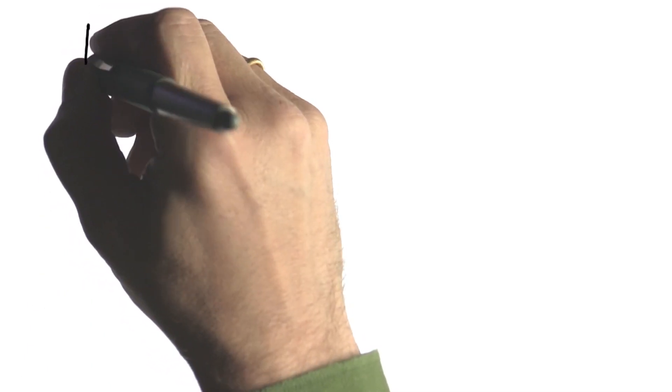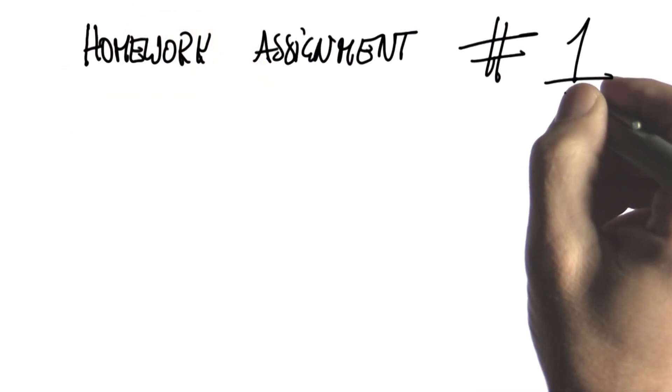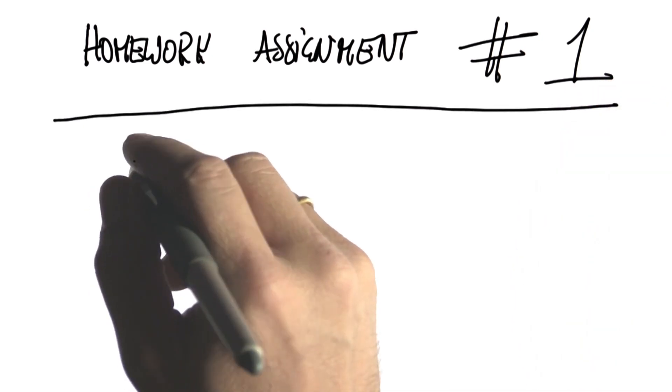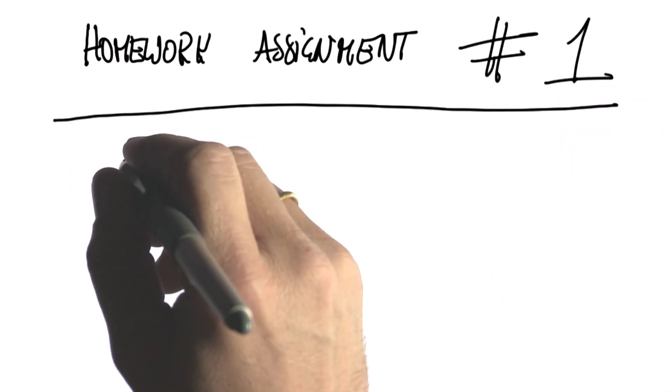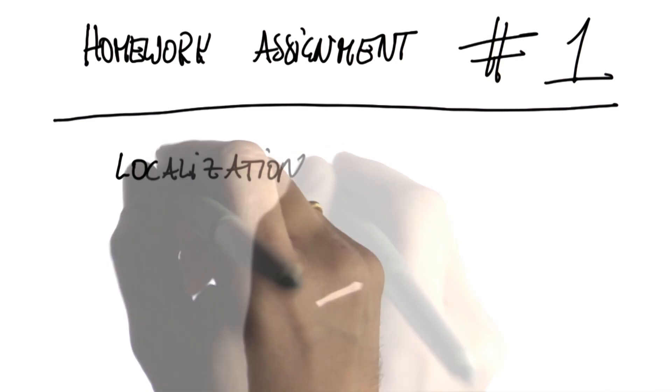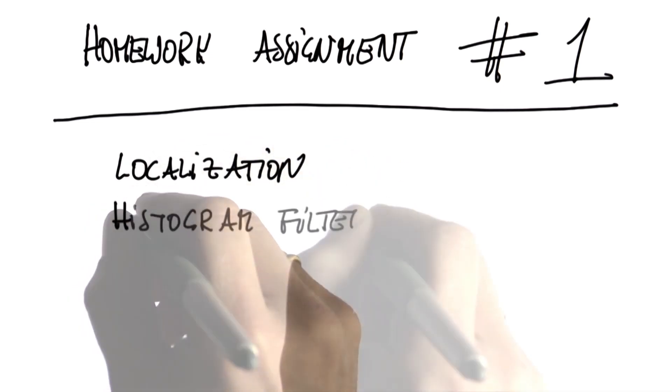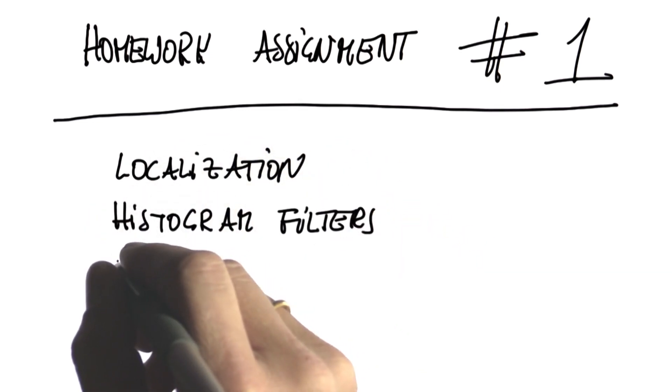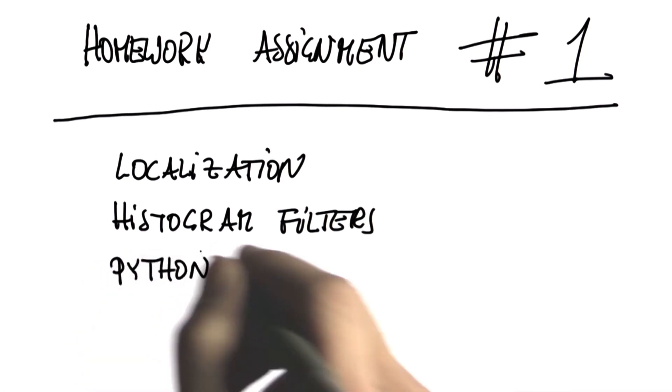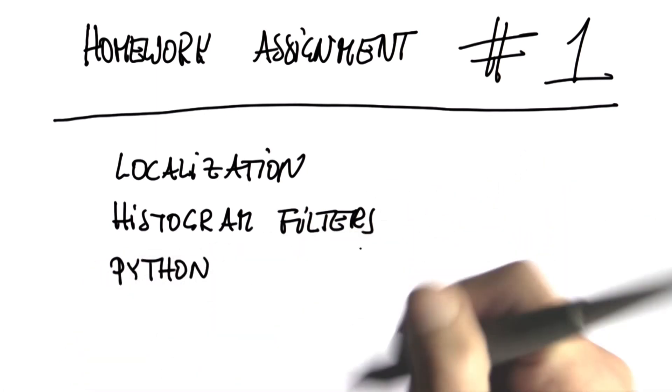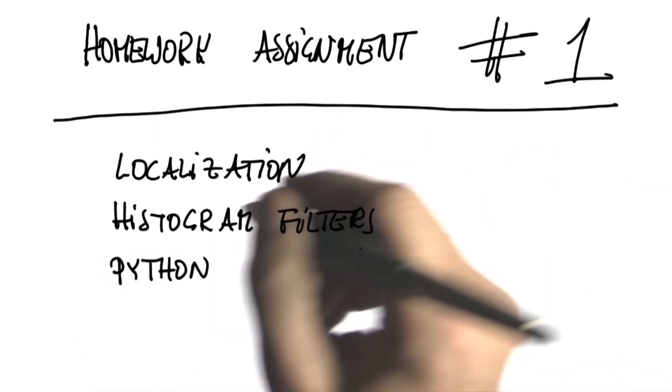So welcome to our very first homework assignment. This is number one. And just to recap, in the class we learned about localization, we learned about histogram filters, and we programmed some in Python. So the homework assignment will cover this plus some very basic probability.